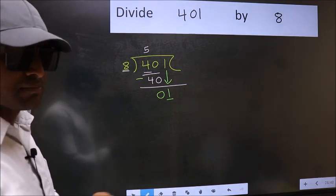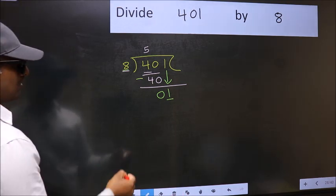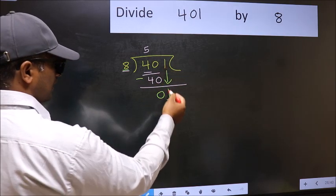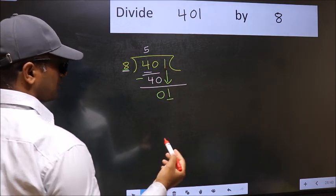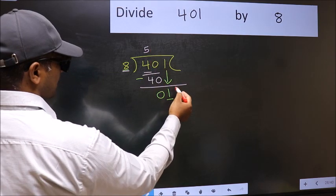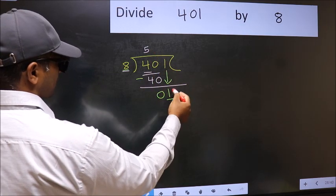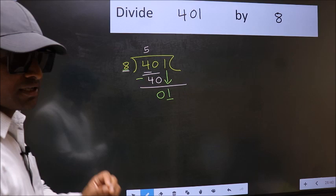Why is it wrong? Because just now you brought this number down, and in the same step, you want to put dot and take 0. Which is wrong.